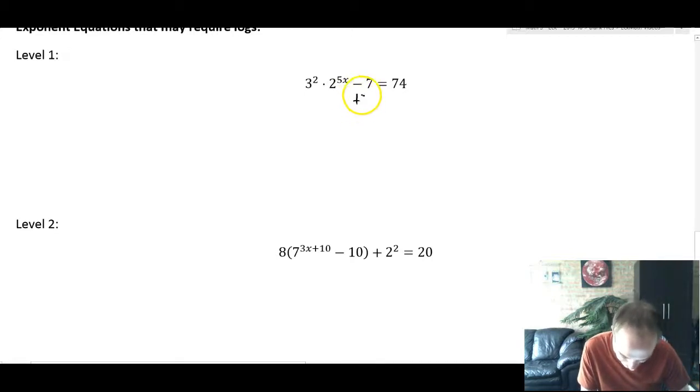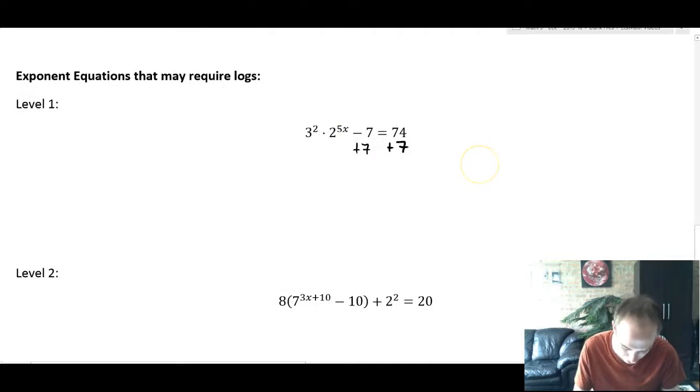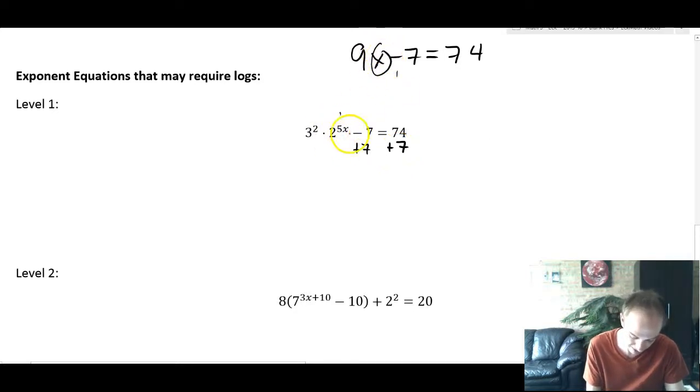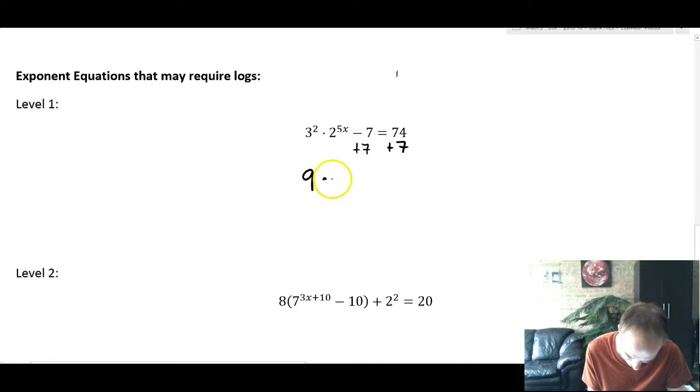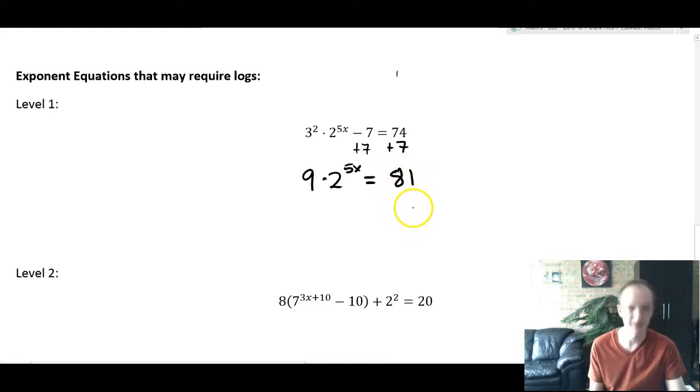We're going to do the level 1 first, so we'll add 7. Notice that you have to do this just like you would do a linear equation. So solve it just the same way you would do 9x - 7 = 74. You would add 7 and divide by 9. We're going to do the same thing here, except instead of x we have this 2^(5x) term. So we're adding 7. So we get 9 times 2^(5x) = 81. That's kind of nice.